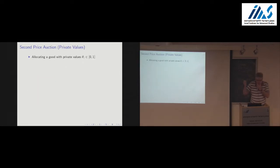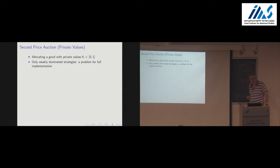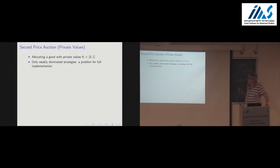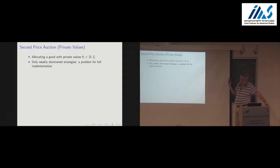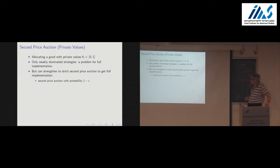More interdependence makes the full implementation problem harder. I'm going to give an example illustrating robust full implementation that makes this point clearer. Let's first consider the problem of allocating a good with private values, say values in the interval [0,1]. You might think a second price auction is a good way of getting the efficient outcome — a well-known mechanism — but there's a slight problem: it achieves efficiency only in weakly dominated strategies, giving rise to many equilibria.